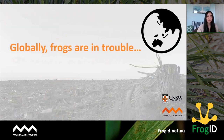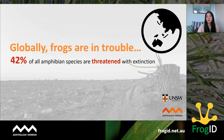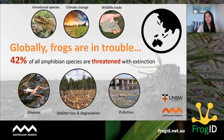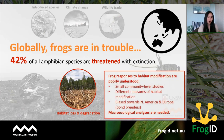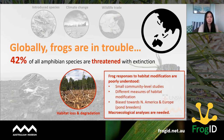Globally, frogs are also in trouble. 42% of all amphibian species, which obviously includes frogs, are threatened with extinction. This is likely due to a combination of introduced species, climate change, illegal wildlife trade, disease, pollution, and most of all habitat loss and degradation.